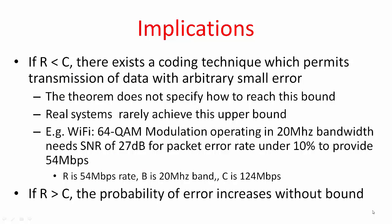Shannon, while he gave this beautiful theorem, does not specify how to achieve that particular maximum achievable data rate. In other words, he doesn't specify what type of modulation or encoding one should use to reach the limit. All the theorem claims is if the sent data rate is less than the maximum, there exists a coding technique which will permit transmission of data with arbitrarily small error. Real systems rarely actually achieve this upper bound.